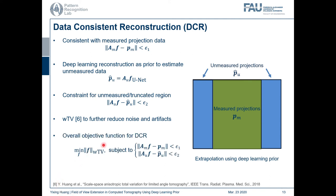This is the overall objective function for our DECA method. We want to minimize the WTV term of the image subject to the two data fidelity terms for the measured regions and unmeasured regions respectively. Because we solve the objective function in an iterative manner, we can initialize the reconstruction with the deep learning reconstruction for fast acceleration.